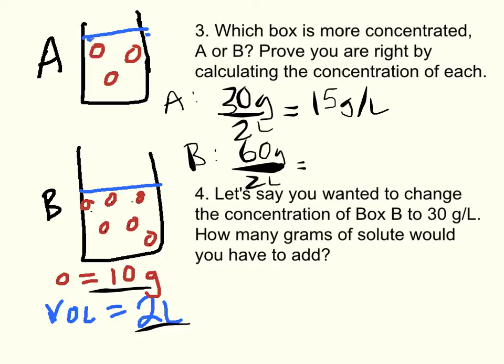Same volume. So this is 30 grams per liter. The one that's more concentrated is B because its concentration is twice that of A. It's 30 grams per liter instead of 15.